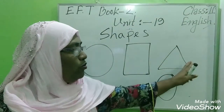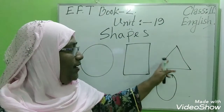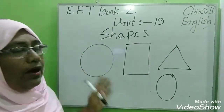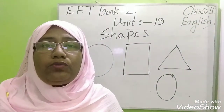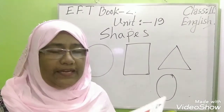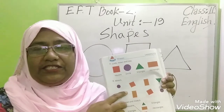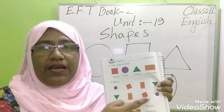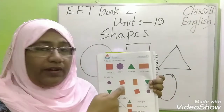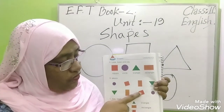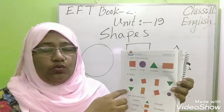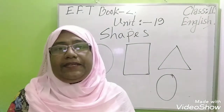Triangle has three sides. In the triangle there are three sides. This one is our square, this one is our triangle. You can see the line here — this one is the triangle.